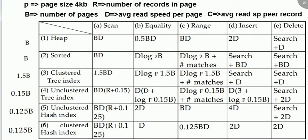For the unclustered hash index, insert or delete costs 4D: search takes 2D for equality search, reading takes 1D, and the insert or delete takes another 1D. For the clustered hash index, insert or delete costs just 2D because you only need to read and then write. Insert and delete costs are the same from index types 2 through 4 as we discussed.